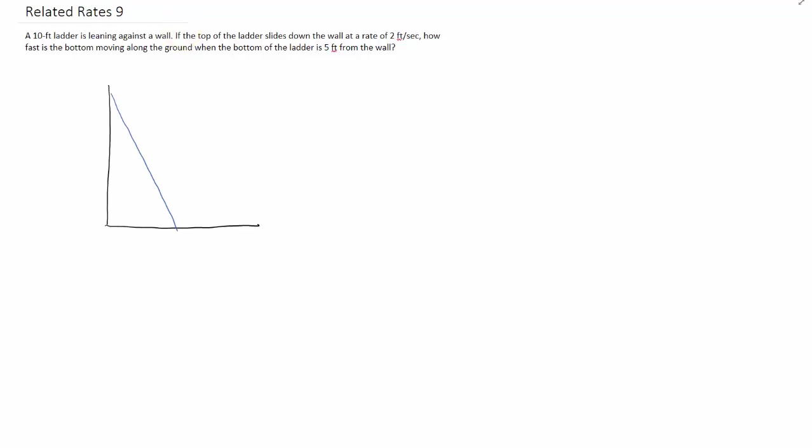So what rate are we given? We're given 2 feet per second is how fast the top of this ladder is sliding down this wall. If we define a variable for the distance from the ground to the top of the ladder here along the wall, say maybe y, then this 2 feet per second is how fast y is changing with respect to time, or dy/dt equals 2.